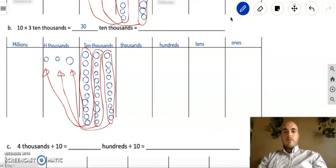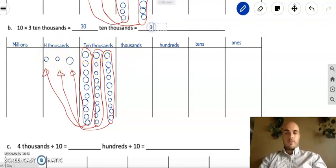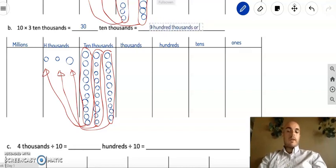So, three groups of ten thousands is the same thing as three groups of hundred thousands. Like so. Awesome. So, what do I really have now? And again, I haven't changed the value. I'm only changing how it's written and the place value it's in. So, instead of thirty ten thousands, I now have three hundred thousands. So, three hundred thousands. Or, we could write it as three hundred thousand. Cool.